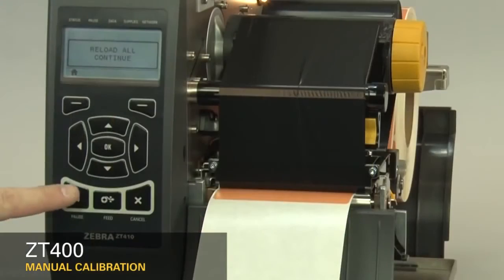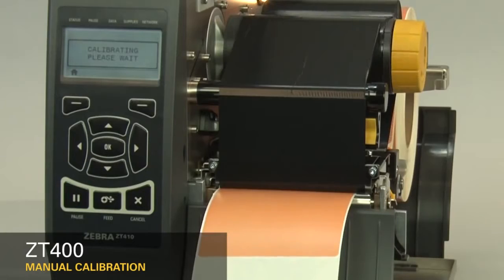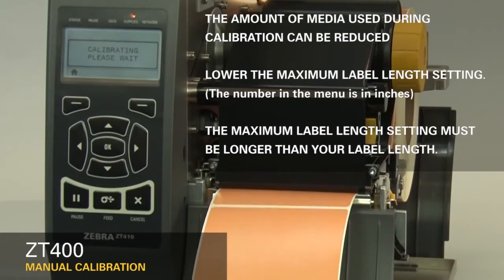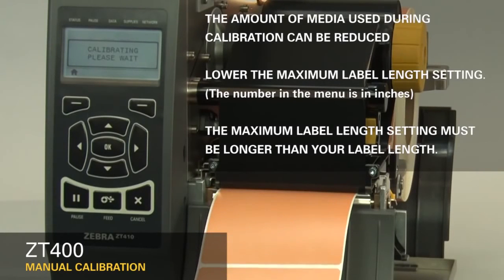The printer is now calibrating. Media will begin exiting the printer. The amount of media can be reduced by lowering the maximum label length setting in the menu. However, it is important that the maximum label length setting is larger than the label length you're printing. Otherwise, the printer may not correctly calibrate. Please note that the number in the menu is in inches.